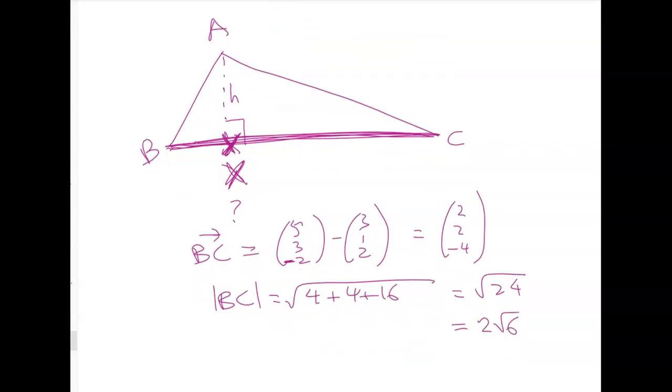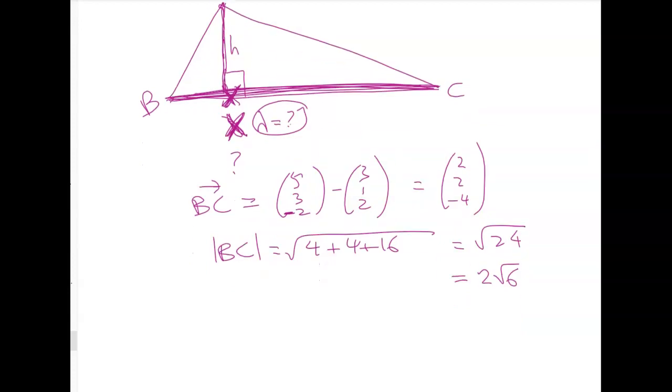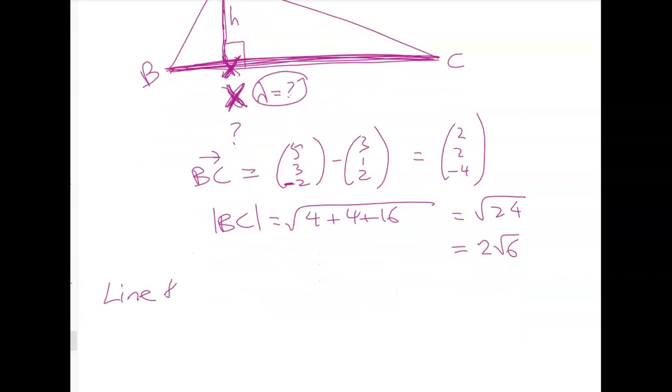Now what about this point X? How do we find it? What we're going to do is we're going to figure out the equation of the line through B and C, and we know that X is on that line, and it's going to have some particular lambda value. And then we're going to figure out where that point is, and then we're going to figure out AX. So the line through BC is R, well, it has a starting point of OB, which is 3, 1, 2, plus lambda times 2, 2, negative 4.